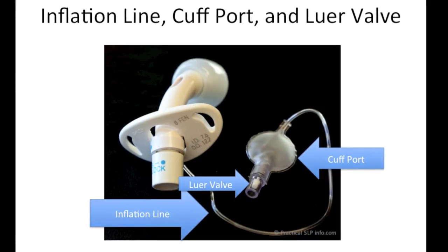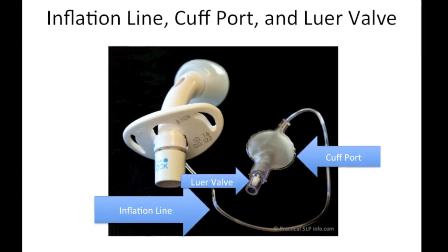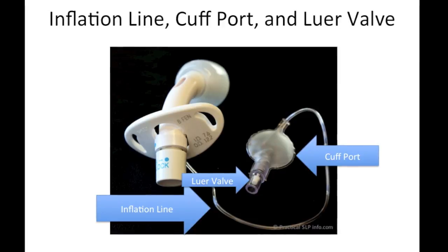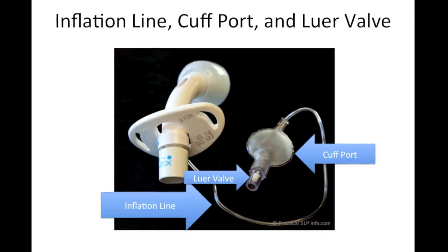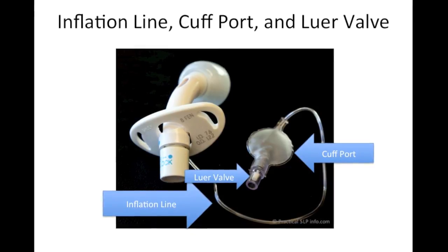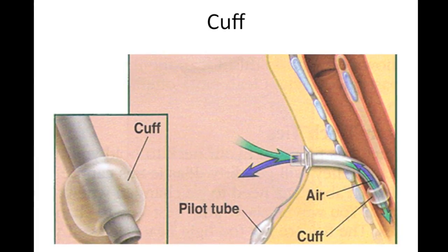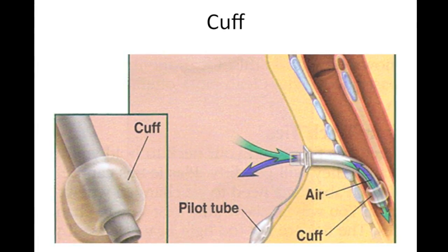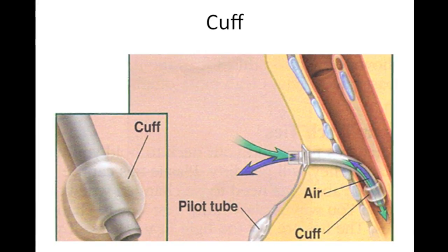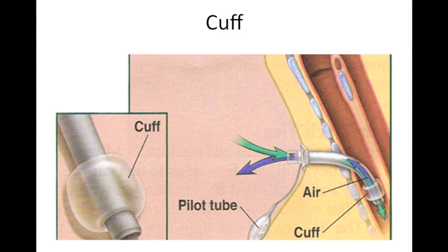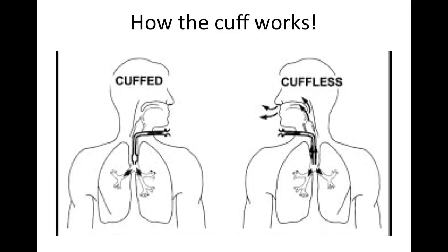The inflation line is thin plastic tubing that carries air to and from the cuff. The cuff port is a small plastic balloon-like component on the end of the inflation line that shows if the cuff is inflated. The lower valve is where the syringe is connected to inflate or deflate the cuff. The cuff, or balloon, is on the end of the tracheostomy tube. When inflated, it forms a seal against the wall of your windpipe, stopping airflow through your mouth and nose so that you breathe through the tracheostomy tube. When the cuff is inflated, the patient will be unable to speak.